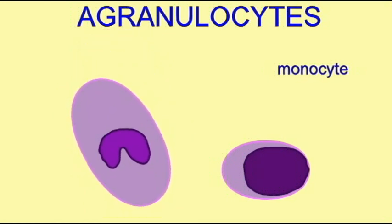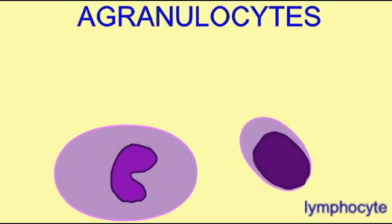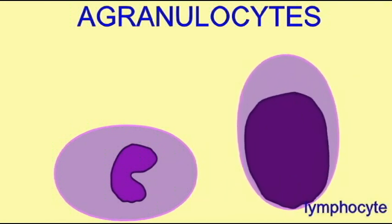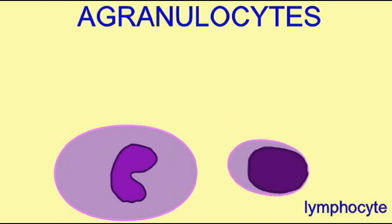These would be monocytes, the largest white blood cells, and lymphocytes, which are smaller and have very little cytoplasm around their nucleus.